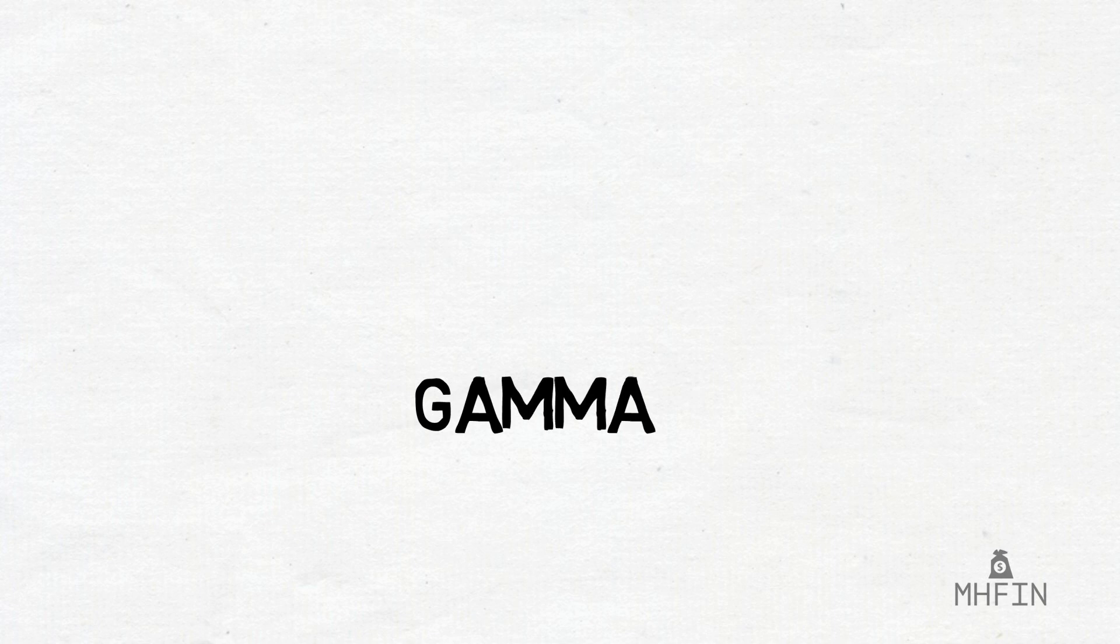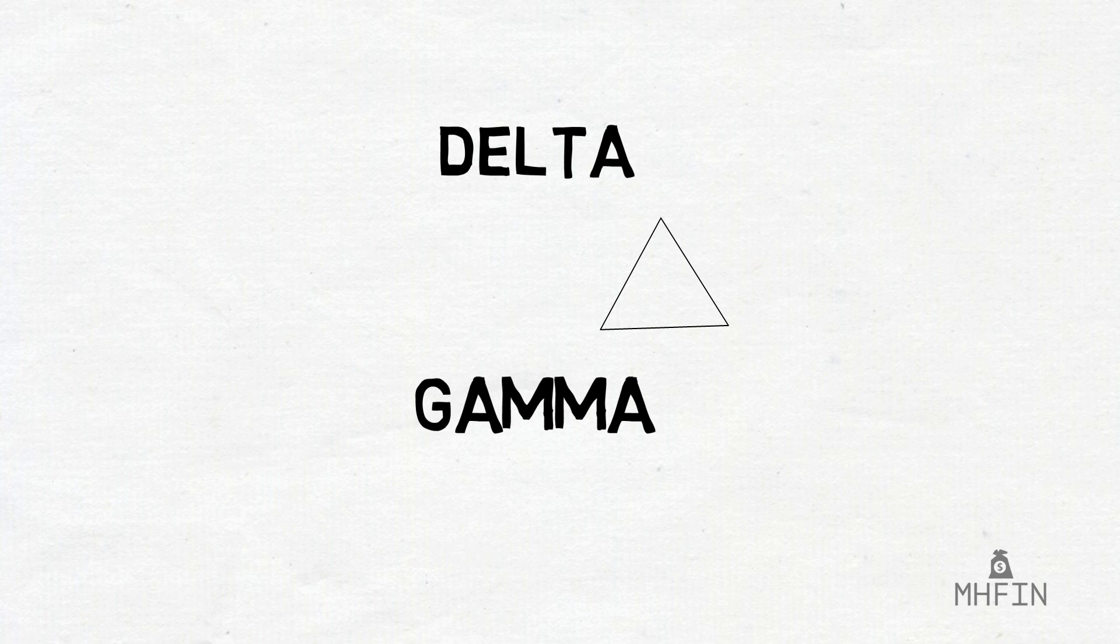Gamma in its most simple definition is the rate of change of an option's delta. It gives us a better understanding of how delta will change when the underlying asset moves.